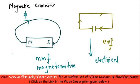So this concept of a magnetomotive flux that is driving a flux around a closed path is known as your magnetic circuit.